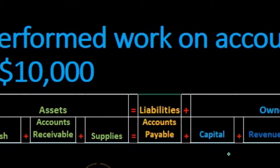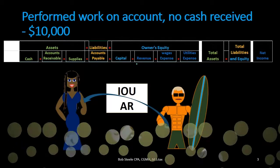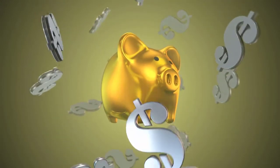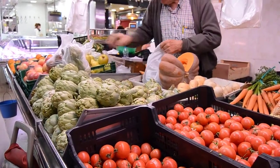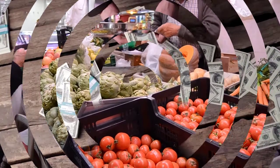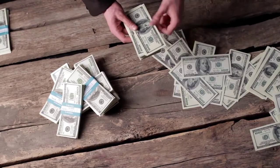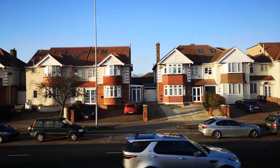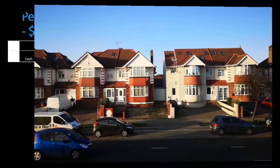In terms of liabilities, we have accounts payable. Within the equity section, we have the capital account and the entire income statement, which includes revenue and expenses. If this were a corporation rather than a sole proprietor, the capital account would be something like common stock and retained earnings, and we would still have revenue and expenses as part of equity. Total assets will equal total liabilities plus equity, and we can look at the impact on net income.